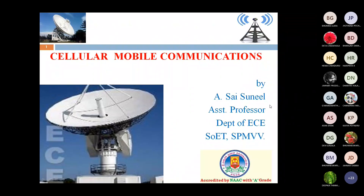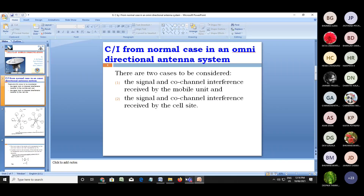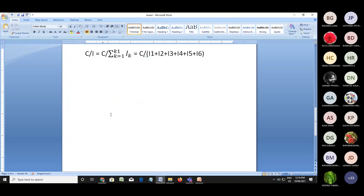Welcome to another session of cellular mobile communications. We are calculating the C/I ratio for the normal case in an omnidirectional antenna system. Before going to the calculation of the C/I ratio, we will first discuss what is meant by an omnidirectional antenna system.